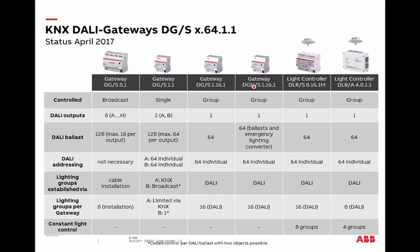The DGS 1-16-1 has one channel but allows creation of DALI groups — DALI supports up to 16 groups on the DALI side. It is easier to create DALI groups than grouping in ETS, and for projects needing up to 16 groups, this device is frequently used. The DGS 1-16-1 with emergency lighting adds integration of emergency light converters in software — converters can be connected and all necessary tests triggered via this gateway, with test results sent back for processing in a superior visualization on the KNX side.